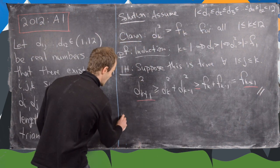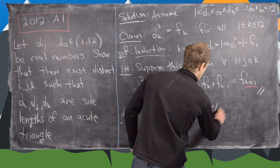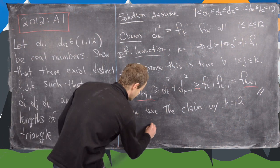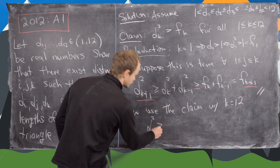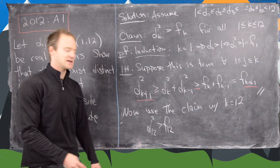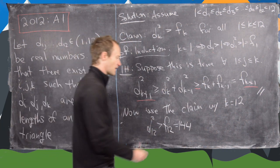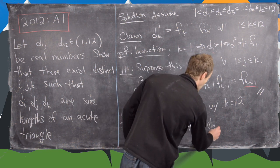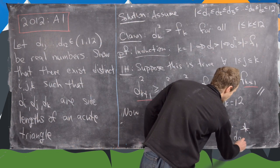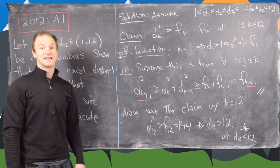We finish by applying the claim with k=12. This gives d12 squared > f12, the 12th Fibonacci number. You can check that f12 equals 144. Therefore d12 squared > 144, which means d12 > 12. But that's a contradiction, since d12 was assumed to be less than 12. That completes the solution.